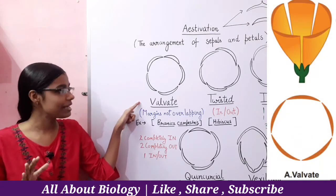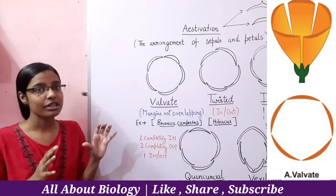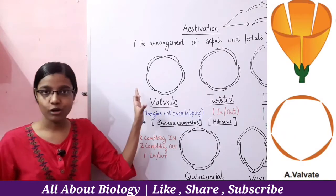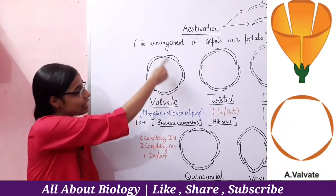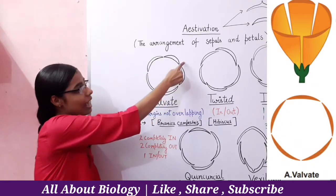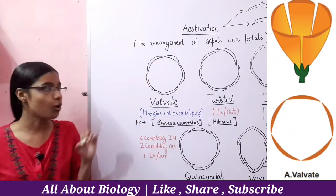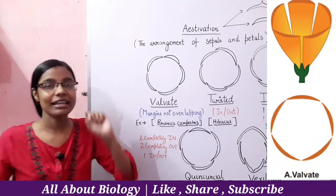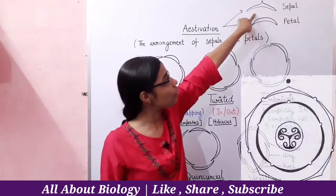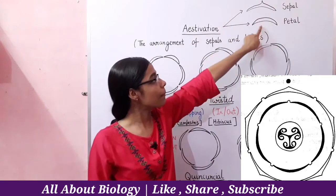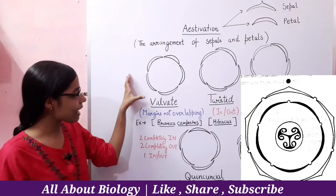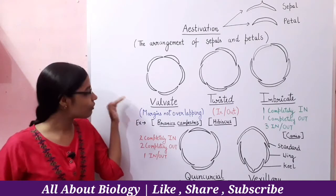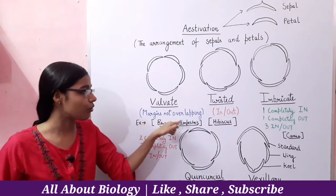In Valvate Estivation, whether it is sepals or petals, the margins will not overlap. The arrangement will be shown in this way. This diagram represents the petal. In Valvate Estivation, you will not see any margins overlapping.